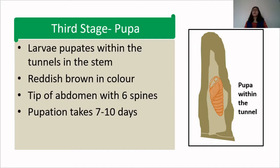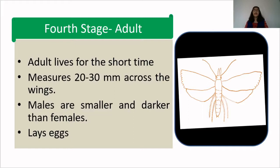The fourth stage is the adult stage. The adult lives for a short time and measures 20 to 30 mm across the wings. Males are smaller and darker than the females. The sole function of the adult is to mate and lay eggs.